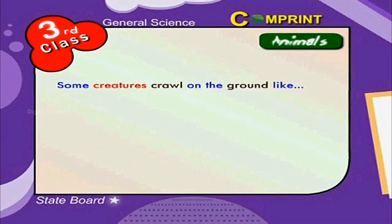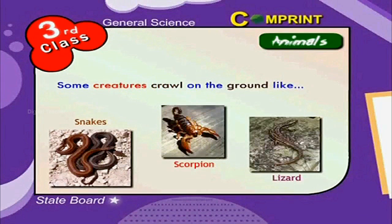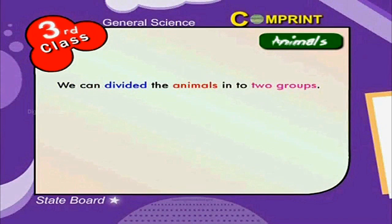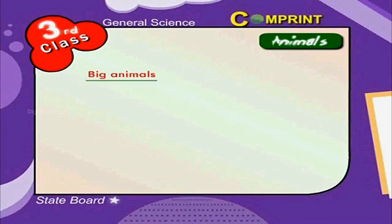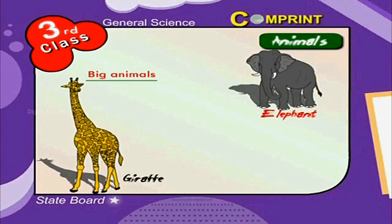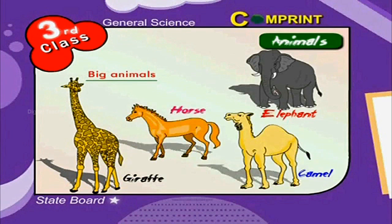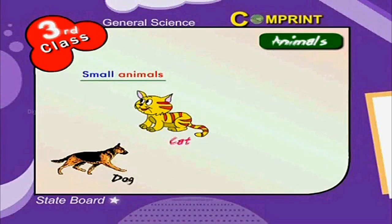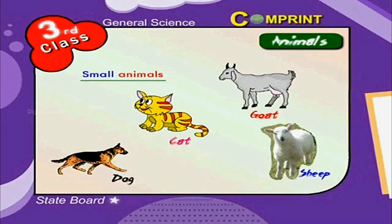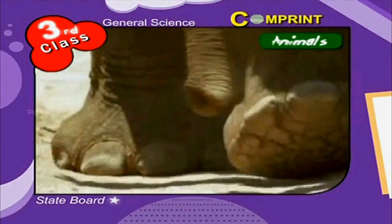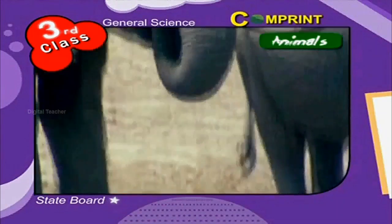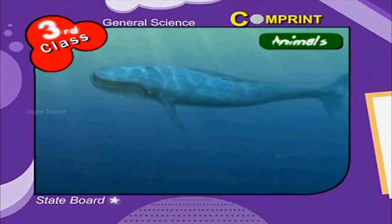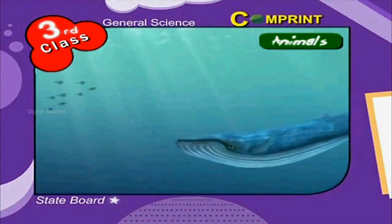Some creatures crawl on the ground like snakes, scorpions and lizards. We can divide animals into two groups: big animals — elephants, giraffe, camel, horse — and small animals like dog, cat, goat and sheep.